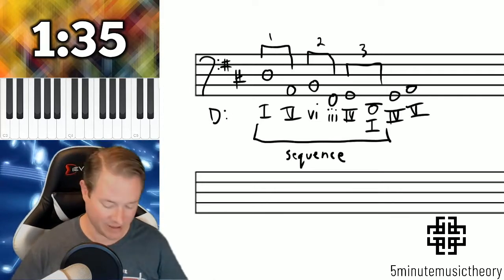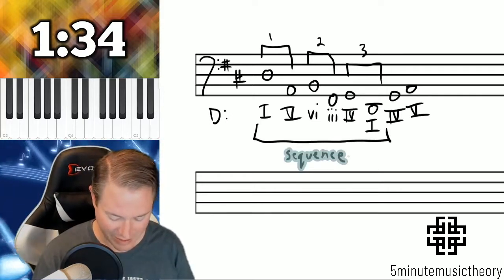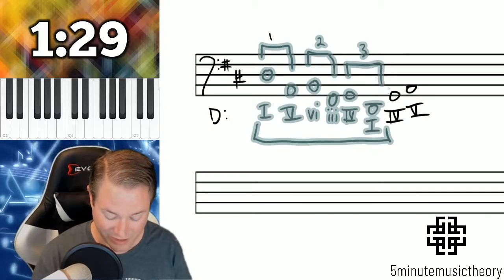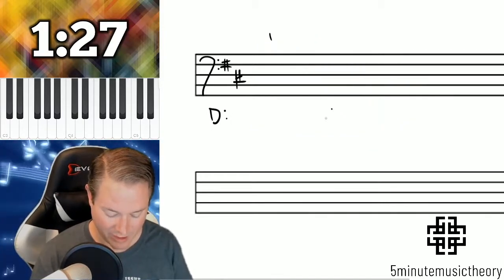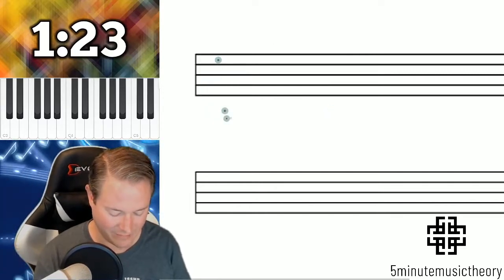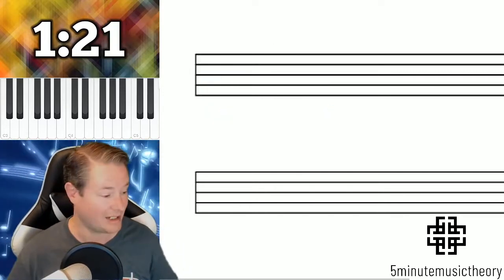And then there's also a couple of different kinds of sequences. There's diatonic sequences, and there are what are known as chromatic sequences or real sequences. Let me show you a quick example of the difference between these. Actually, you know what? I don't even think I need to write this down. I can just play it on the keyboard.